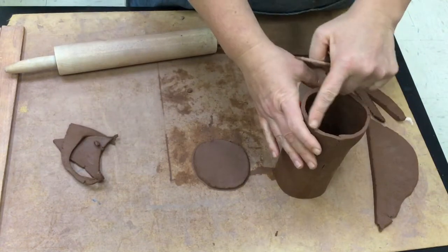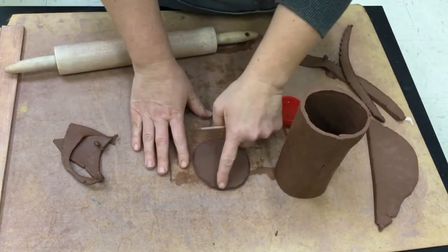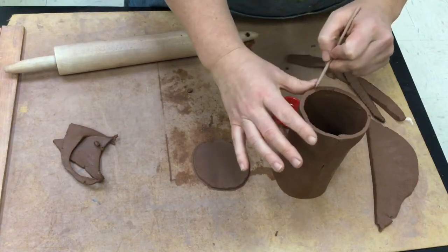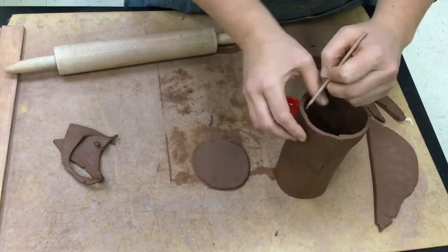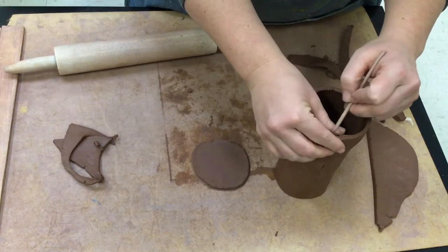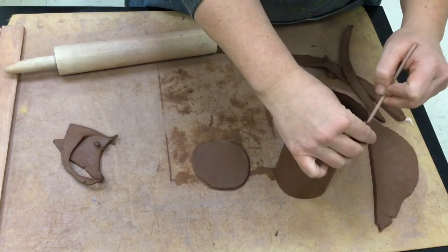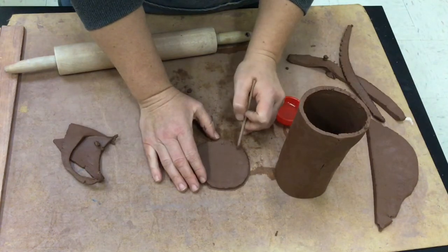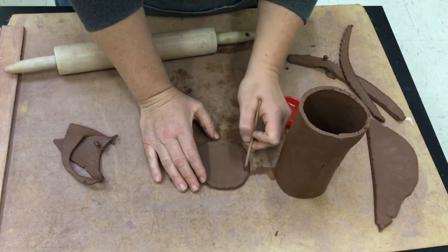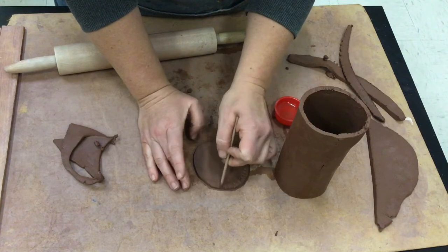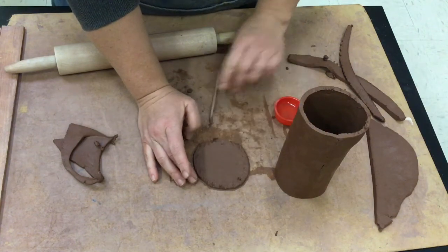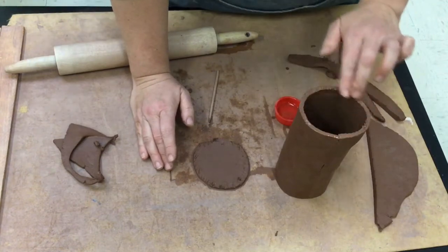This time when we slip and score we're going to do the top edge here and then we are going to do around the outside. So I'm just scratching lightly, doing the same on here, roughing it up so that it will stick. Now I'll add some water, the glue.